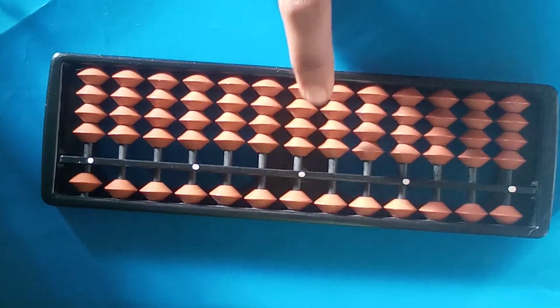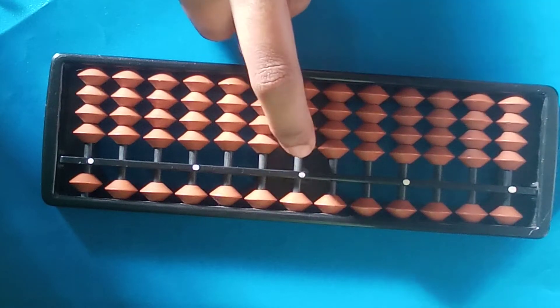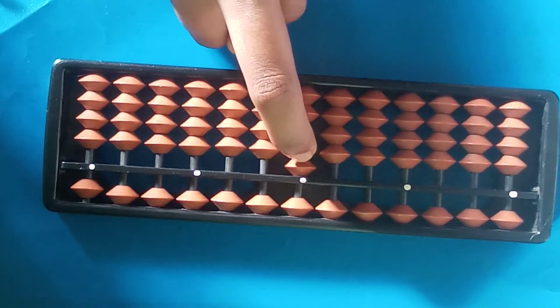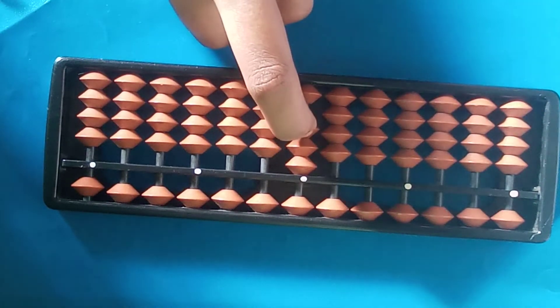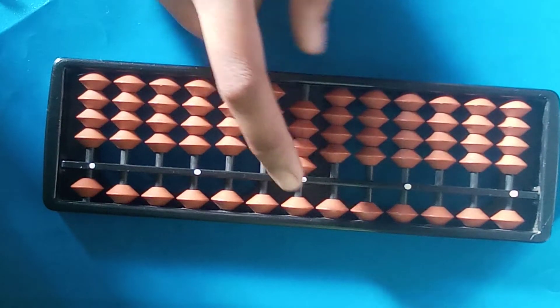But first I introduce how to use this slate. The lower beads total in one rod are four, and upper beads in one rod are five. This one bead value is one. If they are two, this value is two. If they are three, its value is three. If they are four, its value is four.